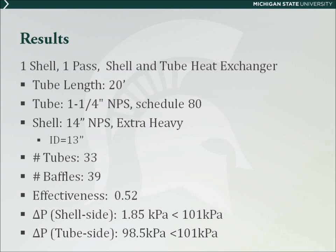1.25 inch NPS tubing was chosen since it met the tube pressure drop requirements. The shell size chosen was MPF 14, with an inner shell diameter of 13 inches, and the extra-heavy schedule was chosen for durability reasons. The number of tubes in this design is 33, with 39 baffles spaced at 6 inches apart. The baffle spacing was determined using the specification that baffles should be spaced at 40-60% of the shell diameter. The effectiveness of this heat exchanger is 0.52, and the pressure drop for each stream stayed below 1 atmosphere.